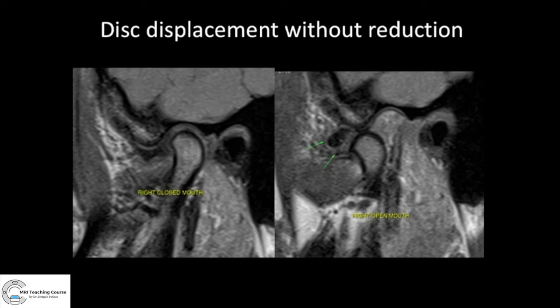To conclude: look at the position of the disc in closed mouth — normal or abnormal. If displaced in closed mouth, assess in open mouth — does it return to normal position, indicating disc displacement with reduction, or does it not, indicating disc displacement without reduction? If the patient cannot open the mouth, document that you are unable to assess the disc position in open mouth due to limited mouth opening. Also look for joint effusion and marrow edema, osteoarthrosis changes, retrodiscal tissue signal, and the lateral pterygoid muscle for edema or scarring.